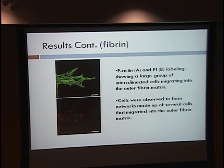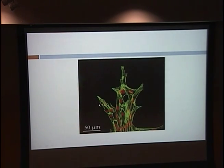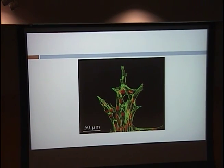Here's how we determined if more than one cell was involved. These two images use different stains: the top is a stain for the cytoskeleton, and the bottom is a stain for the nucleus. When you overlay these pictures you get an image showing multiple cells working together, going out and pulling on the fibrin.